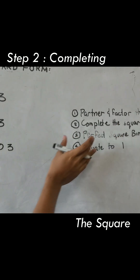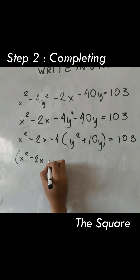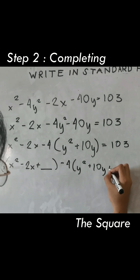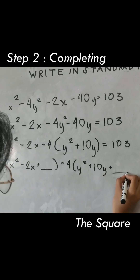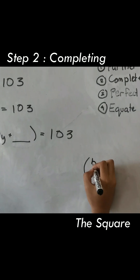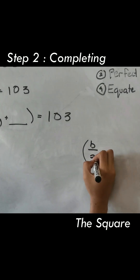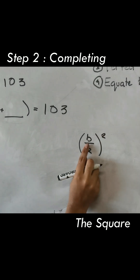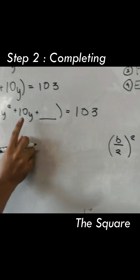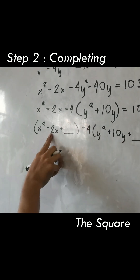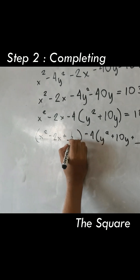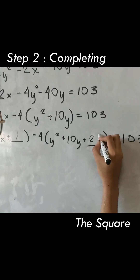Completing the square — put a space here, then put another space here. b over 2, squared. Now what is b? b are these terms here, which is simply 1. Add 1 here, 25 here.